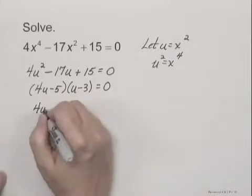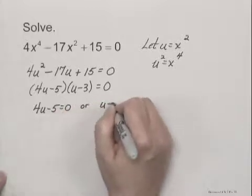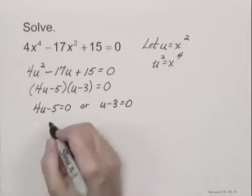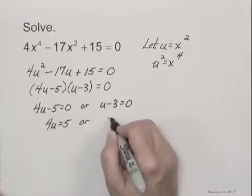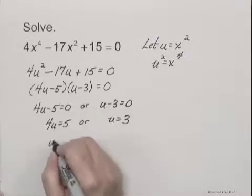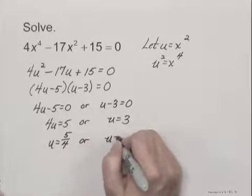So 4u minus 5 equals 0, or u minus 3 equals 0, which gives us 4u equals 5, or u equals 3. And finally solving here, we would have u equals 5 fourths, or u equals 3.